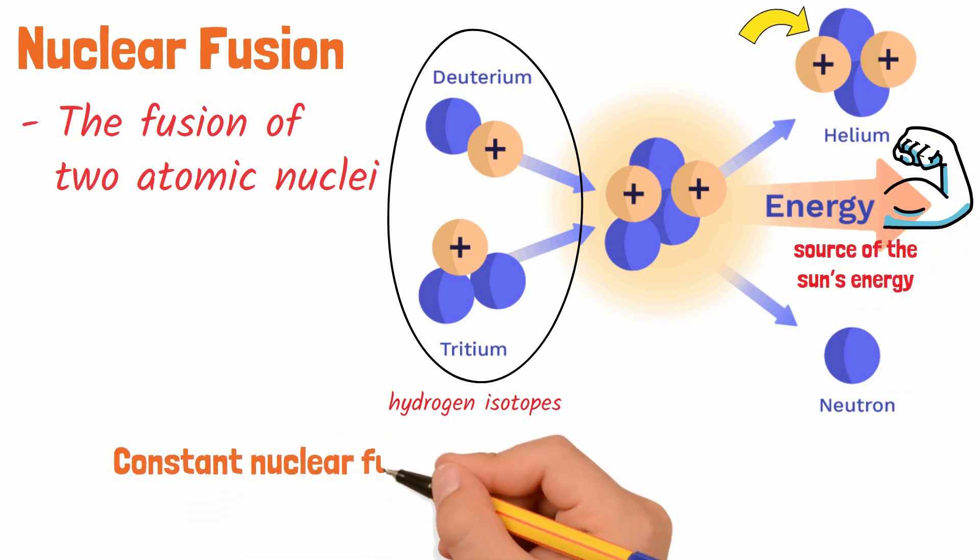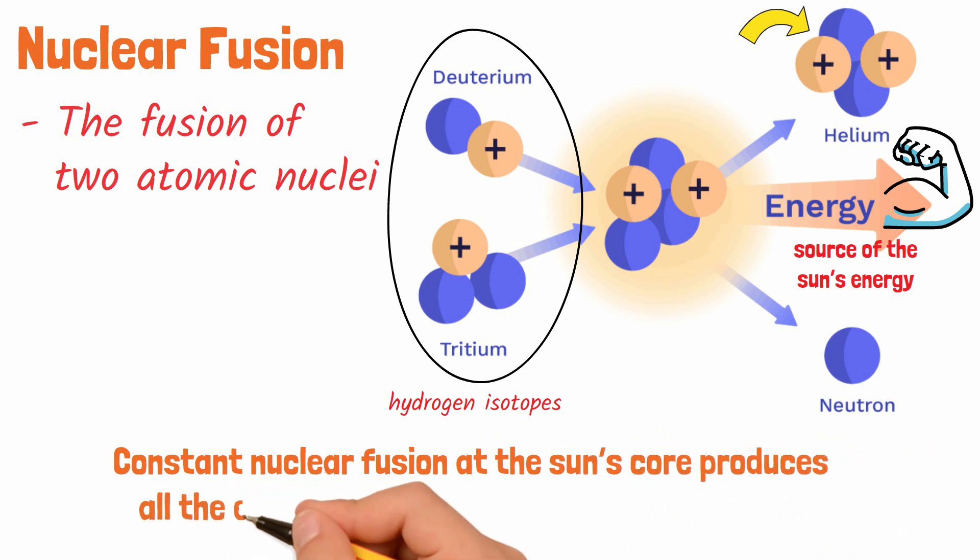Constant nuclear fusion caused by the high temperature and pressure of the Sun's core produces all the energy we've been talking about today.